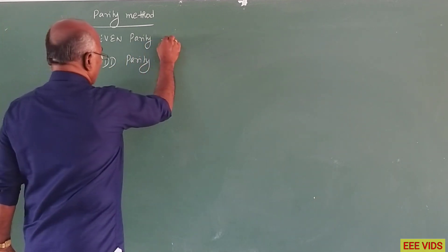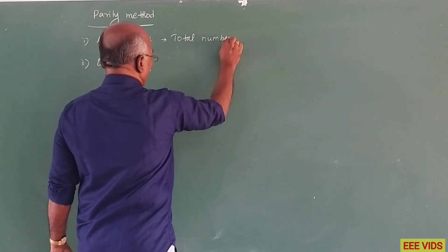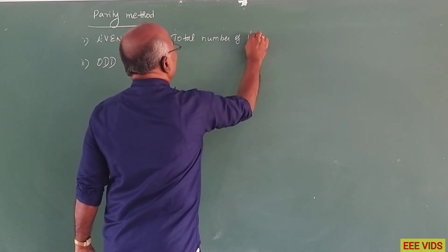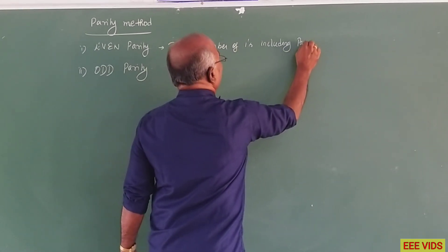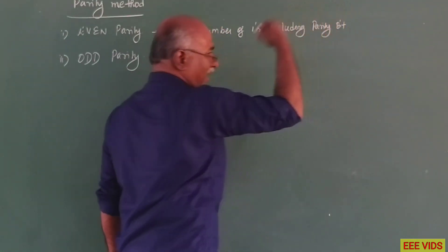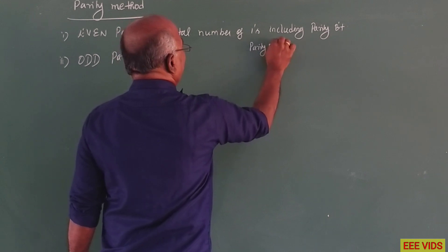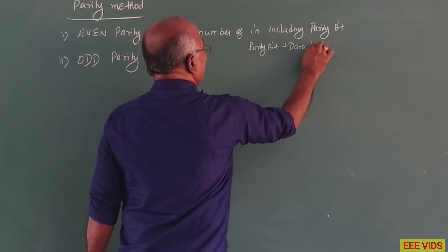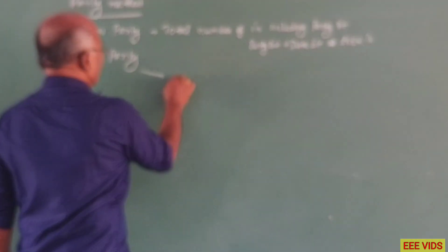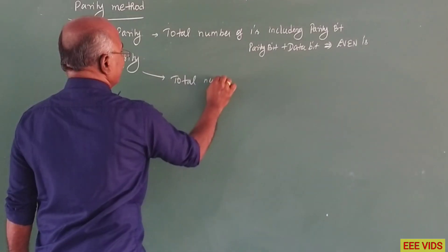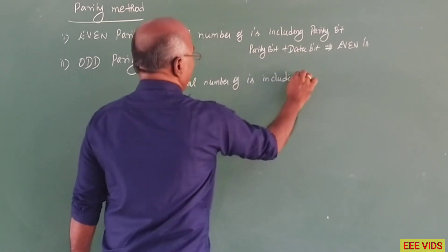In the even parity method, the total number of ones including the parity bit must be an even number. The parity bit is chosen so that the total count of ones, including the parity bit, results in an even number of ones.